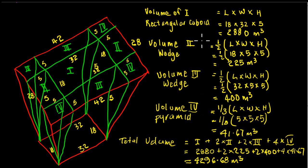So to work out the total volume, we have volume 1 here, two lots of volume 2, two lots of volume 3, and four lots of volume 4. Which we put into our formula here, add it all together, and we get 4,296.68 cubic meters. But too exact for this type of thing.